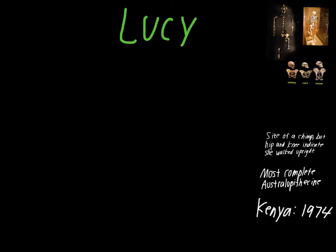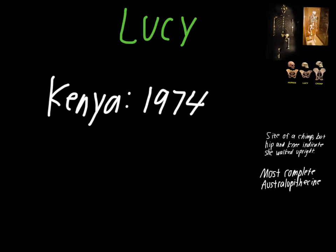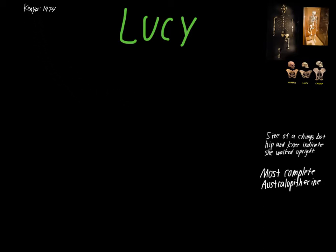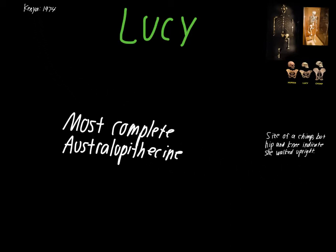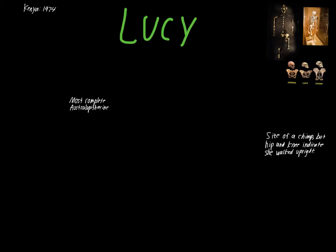The other piece of fossil evidence we're going to talk about is Lucy. Lucy is probably one of the most famous examples of an evolutionary fossil because it's so complete. As far as the discovery goes, Lucy was found in Kenya in 1974. The reason this one is so popular, often referenced simply as Lucy, is that it's the most complete australopithecine fossil that has ever been discovered. Most individuals, they're finding maybe a pelvic bone or just a skull or parts of the arm. With Lucy, they found quite a bit that was all still in fairly good condition.